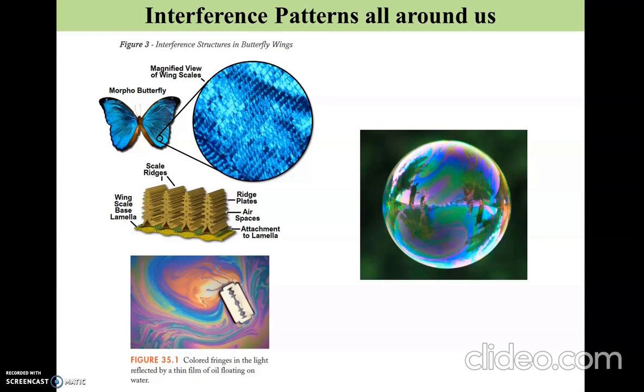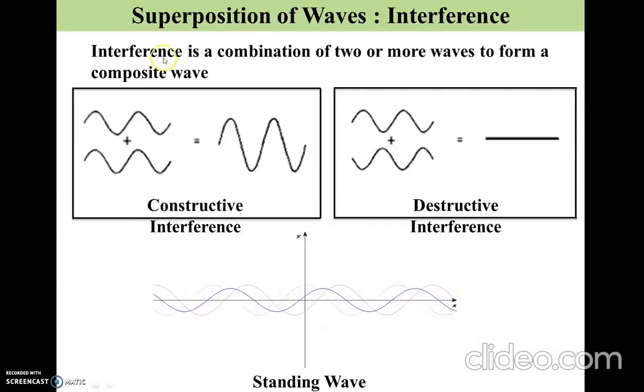You might have seen certain examples in which you see color form on soap bubbles, or if you have oil floating on water, you can see these colored fringes appear. These are all examples of interference of light waves that are happening when they interact with matter. Essentially, whenever you are getting constructive interference, you are matching your crest and your troughs of the two waves, and the resultant wave has a much higher intensity than the individual waves.